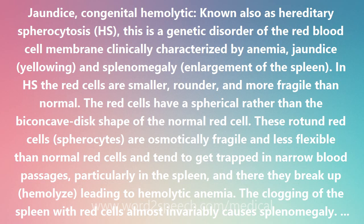In HS, the red cells are smaller, rounder, and more fragile than normal. The red cells have a spherical rather than the biconcave disc shape of the normal red cell. These round red cells — spherocytes — are osmotically fragile and less flexible than normal red cells, and tend to get trapped in narrow blood passages, particularly in the spleen, where they break up and hemolyze, leading to hemolytic anemia. The clogging of the spleen with red cells almost invariably causes splenomegaly.